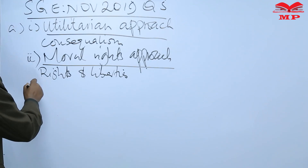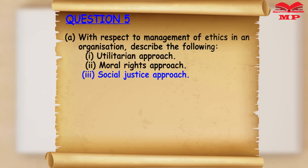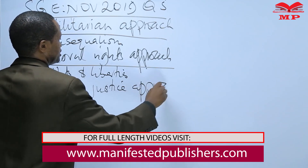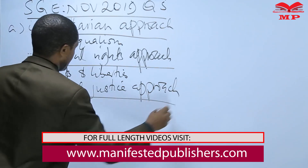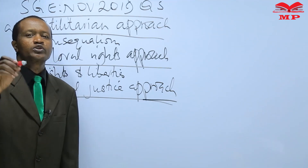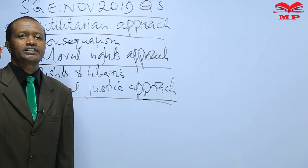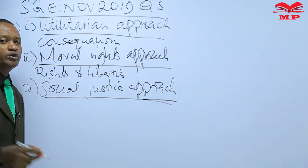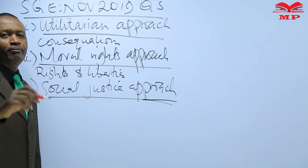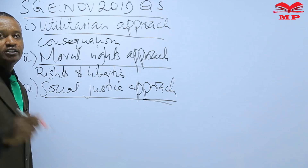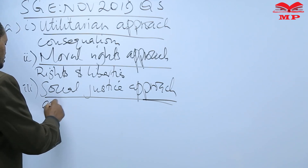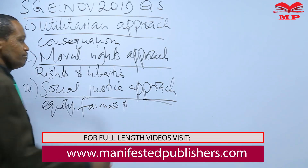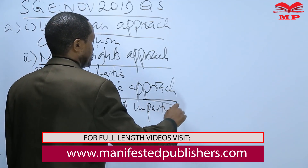Number three, the Social Justice Approach. This asserts that moral decisions must be based on standards of equity, fairness, and impartiality. So moral decisions must be grounded in equity, fairness, and impartiality.